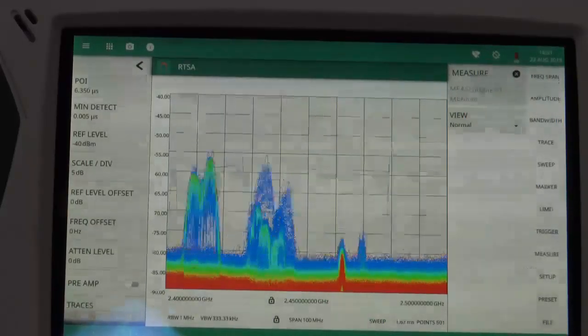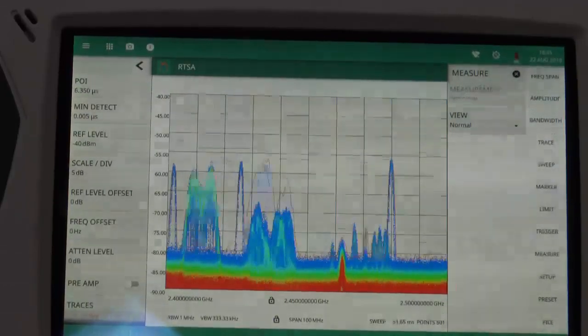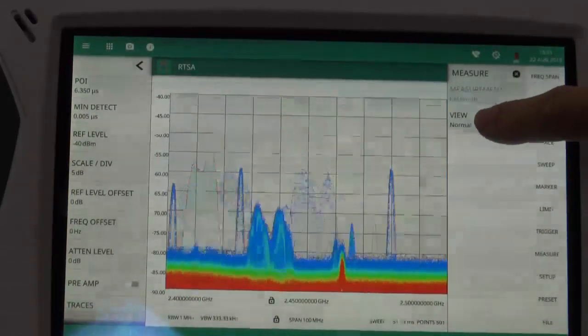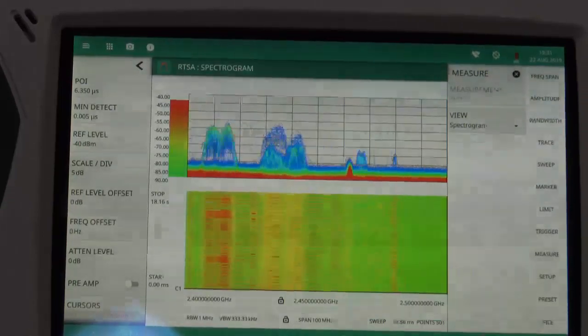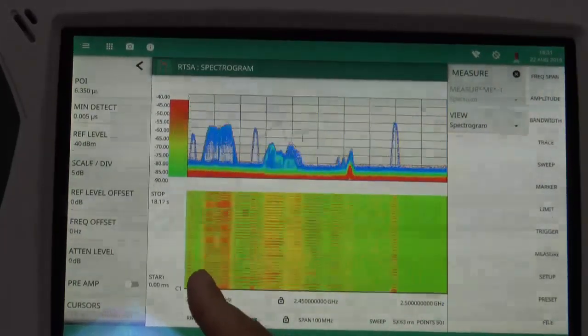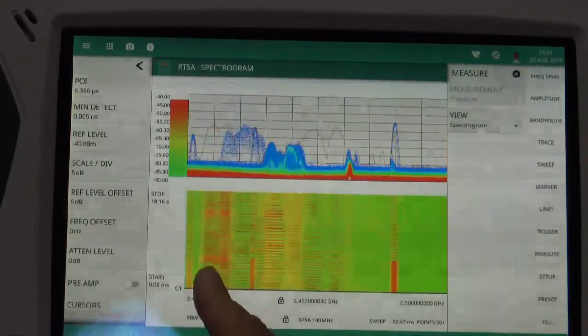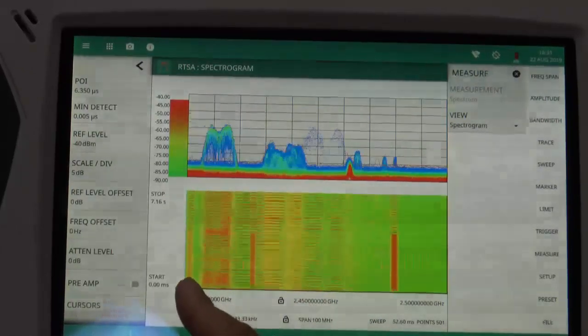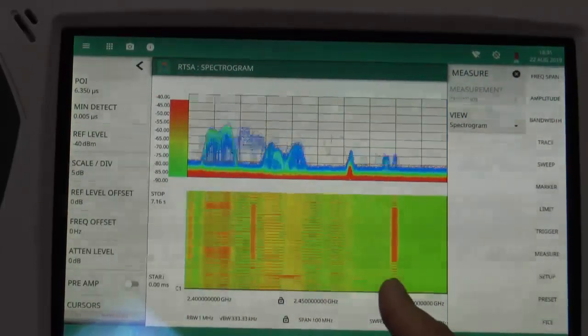Another useful tool for showing us the history of what's happened within the spectrum is the spectrogram mode. If I enable spectrogram, we build up a history of what's happened over a period of time and we can clearly see the activity in the wireless LAN access points here and here and we can clearly see the Bluetooth low energy packets.